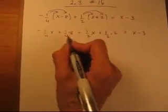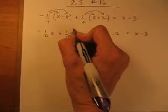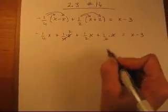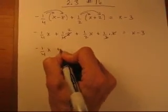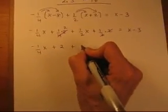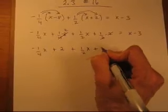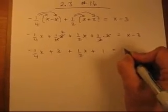Now we can do some canceling. 4 goes into 8 twice, 2 goes into 2 once. And rewriting, we get minus 1/4 x plus 2, plus 1/2 x plus 1 equals x minus 3.